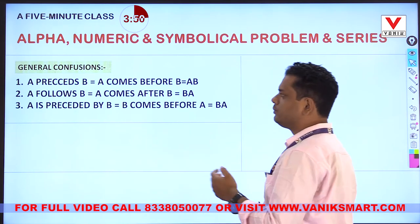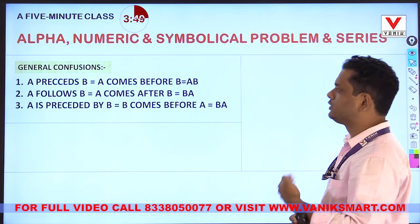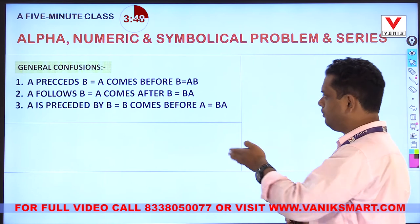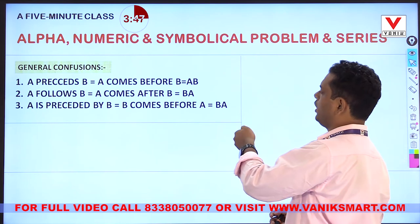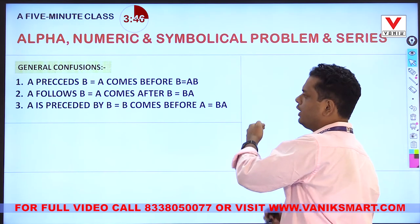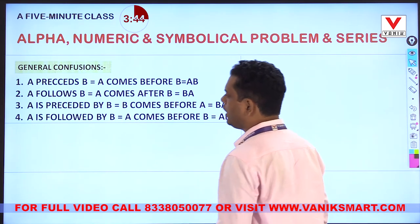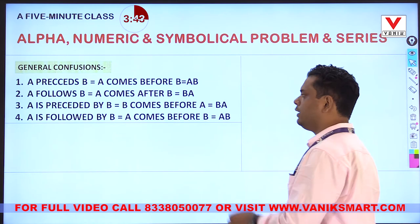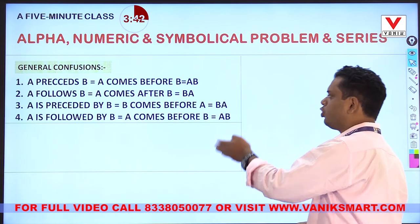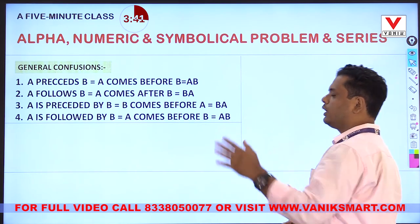Number three: 'A is preceded by B' means B comes before A — the format is B A. Number four: 'A is followed by B' means A comes before B. This is the critical one that causes confusion.